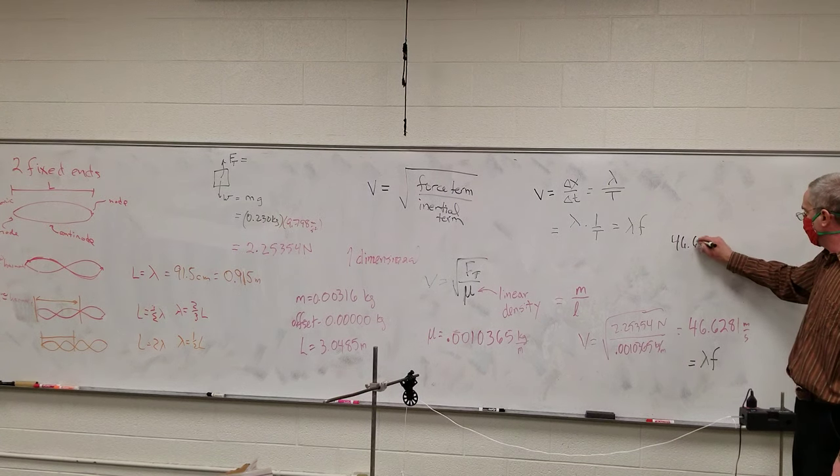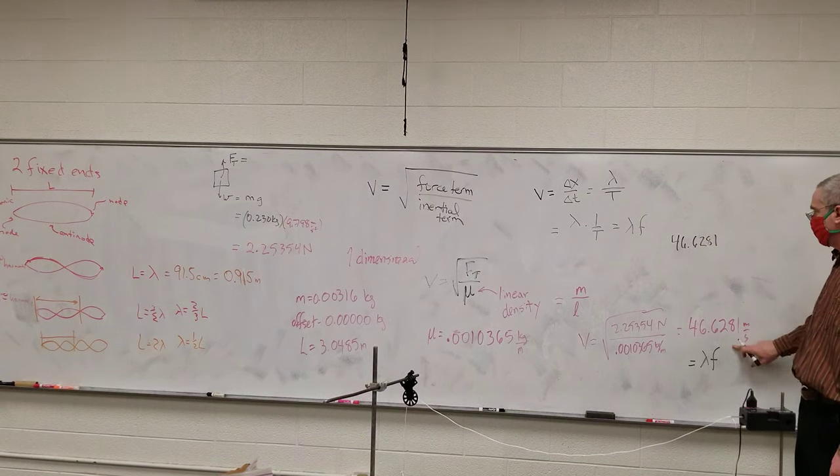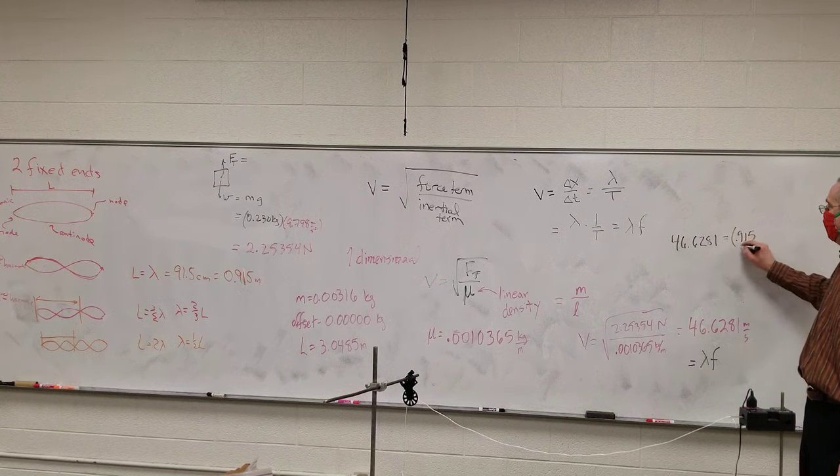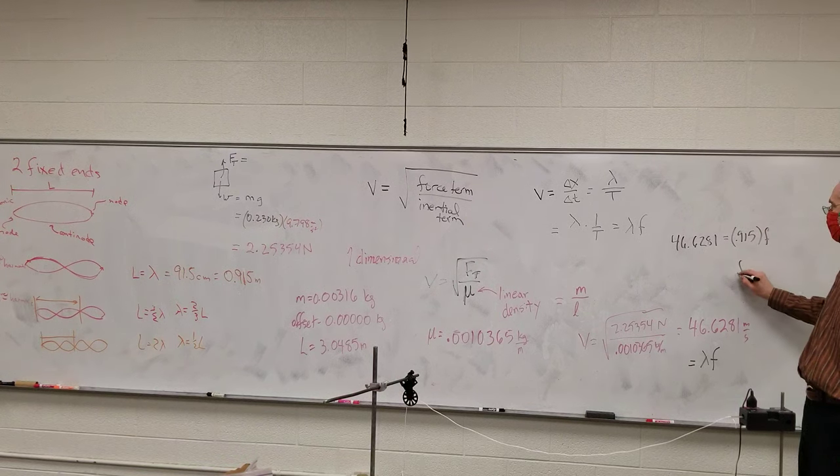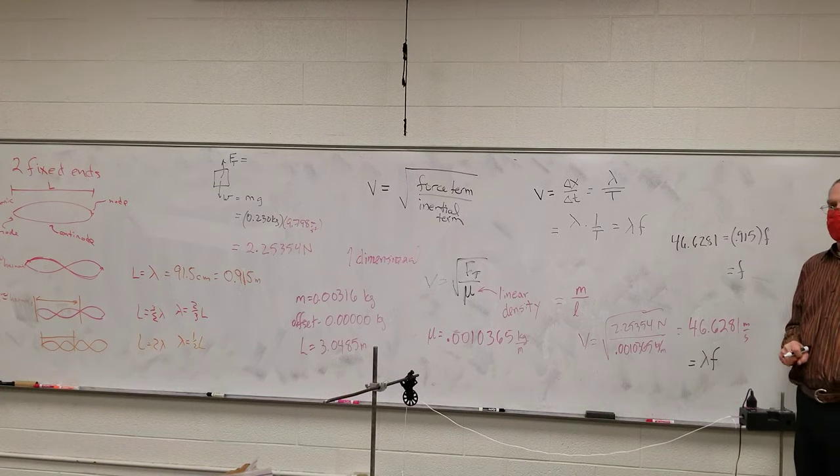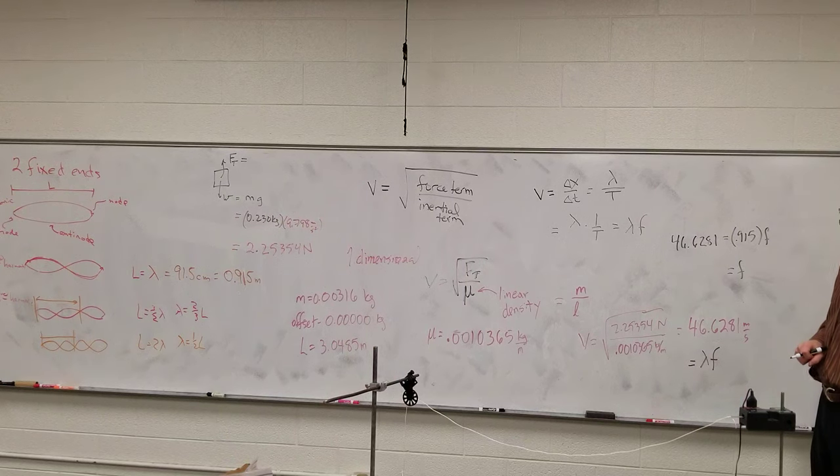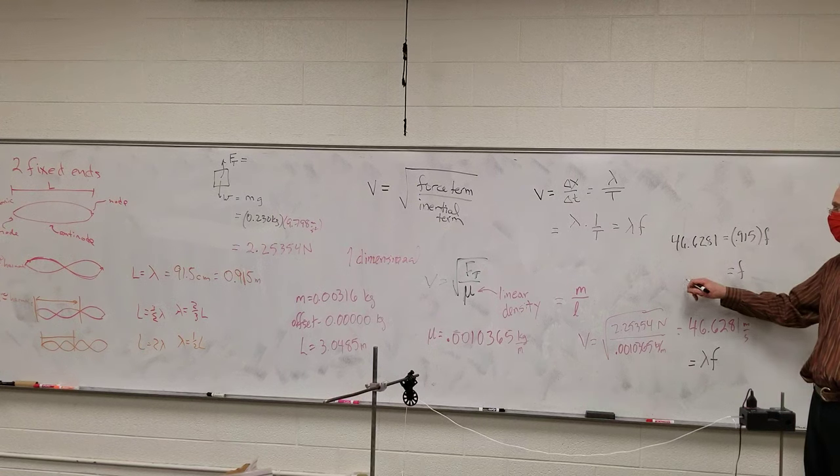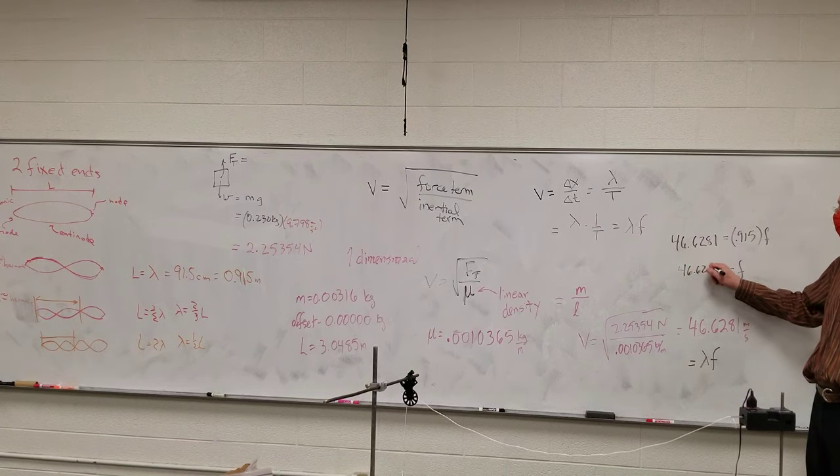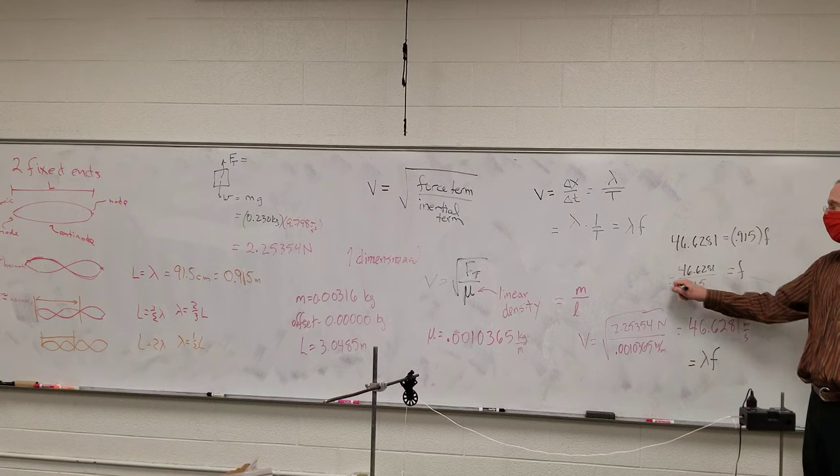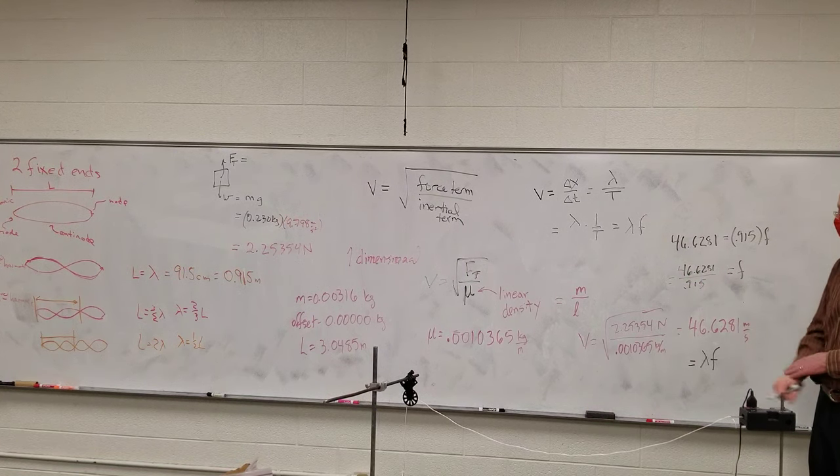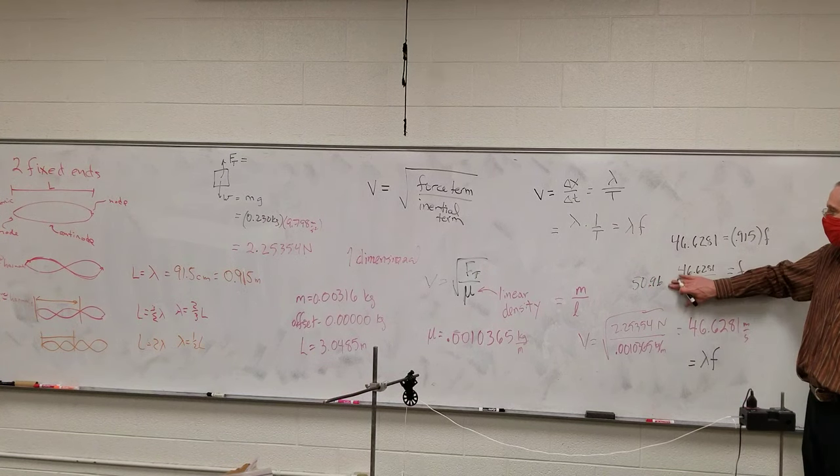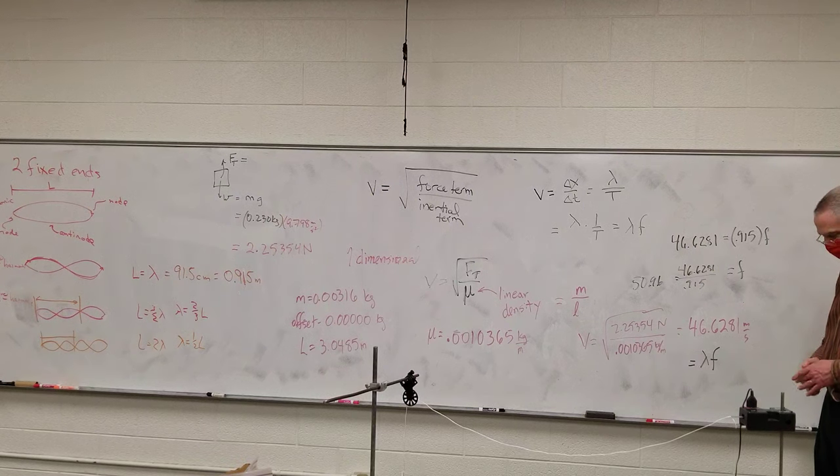46.6281, the speed, is equal to my wavelength, 0.915, times my frequency. So the math problem is 46.6281 divided by 0.915. 50.96 units. Hertz. Yep.